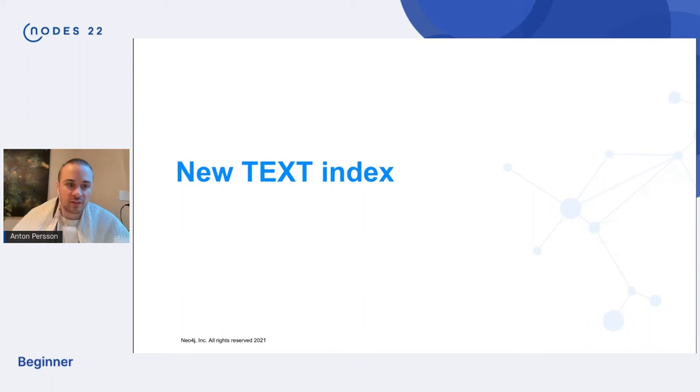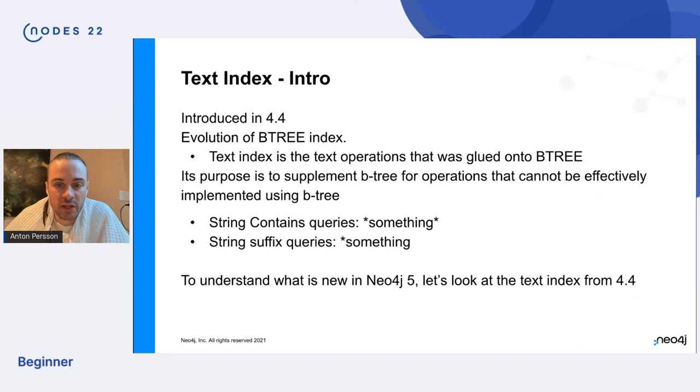Okay. So let's talk a little bit about the text index type. We have introduced a new implementation in Neo4j 5 of this type, but for that to make sense, I wanted to take a tour into some technical details about how it works in Neo4j 4.4. And this will be kind of technical, so strapped in, but I'll do my best to keep it understandable.